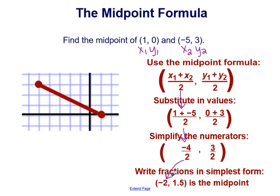Now we do the same for the y-coordinates: y1 plus y2 divided by 2 is 0 plus 3 divided by 2. Simplifying the numerator, 0 plus 3 is just 3, so the fraction 3 over 2 can be written as 1.5. So the midpoint between the points (1, 0) and (−5, 3) is (−2, 1.5) — and you can see that it's in the middle of the segment. It's the midpoint.